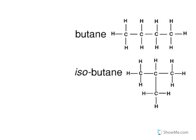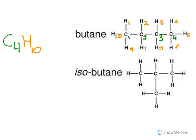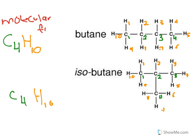Let's write the molecular formula for butane. Count the carbons: 1, 2, 3, 4 — C4. Count the hydrogen: 1 through 10 — H10. So C4H10. Now let's do the same for isobutane: carbons 1, 2, 3, 4 — C4. Hydrogen 1 through 10 — H10. Both have the same molecular formula C4H10 but different structural formulas.